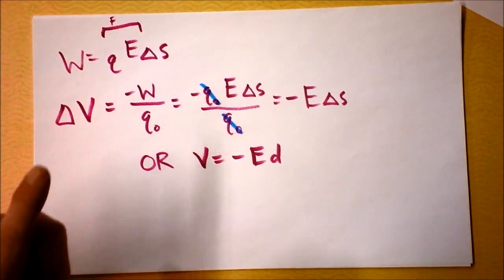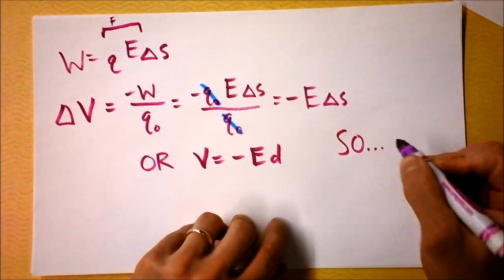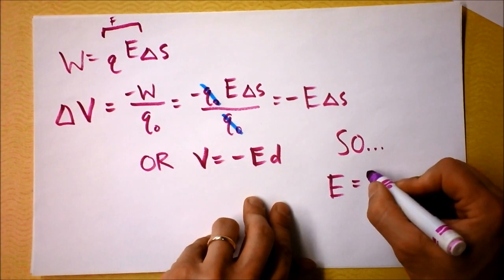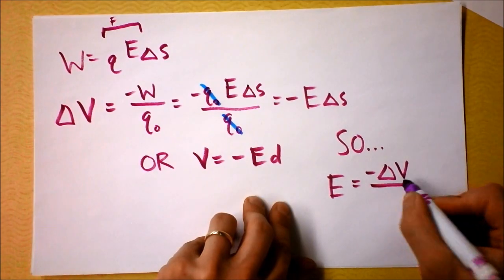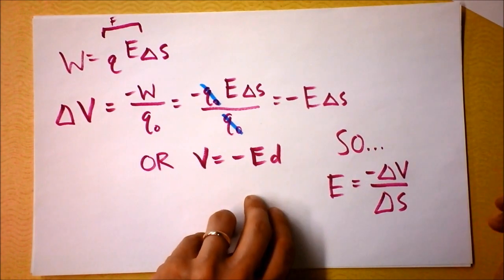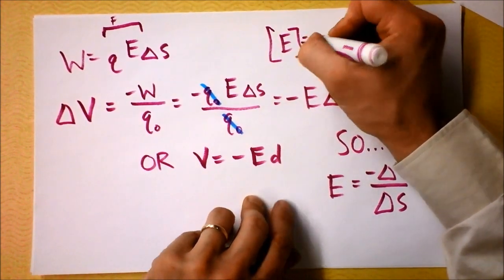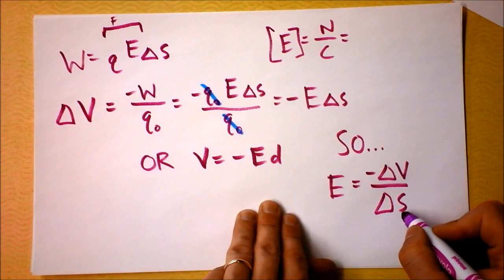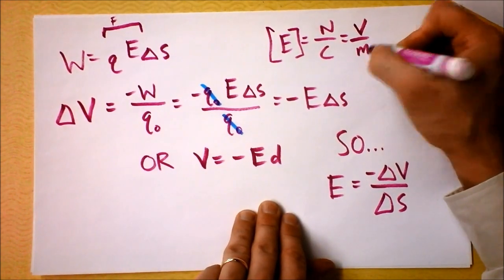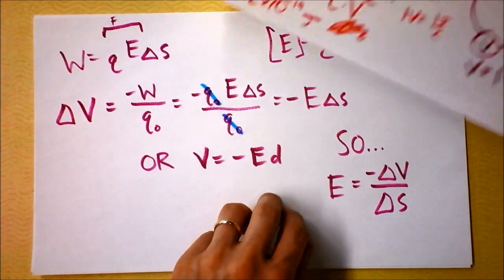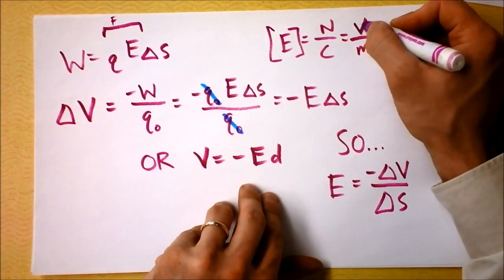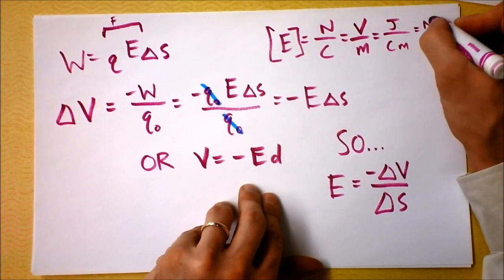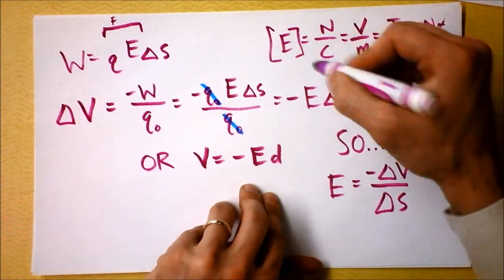We can now say that the electric field E equals the change in electric potential divided by the change in position — with a minus sign. That means we have some new units for electric field. Electric field was newtons per coulomb, but it's also volts per meter. A volt is a joule per coulomb, so joules per coulomb-meter equals newton-meters per coulomb-meter, and the meters cancel, giving newtons per coulomb.